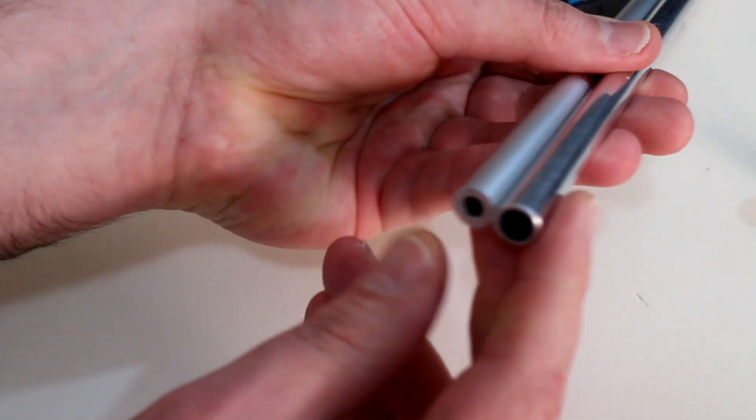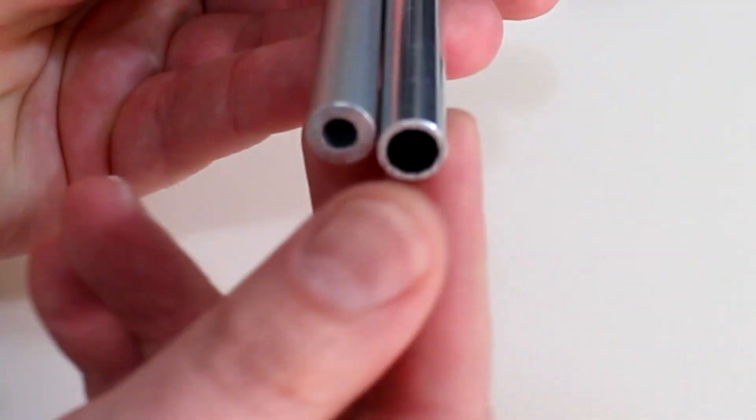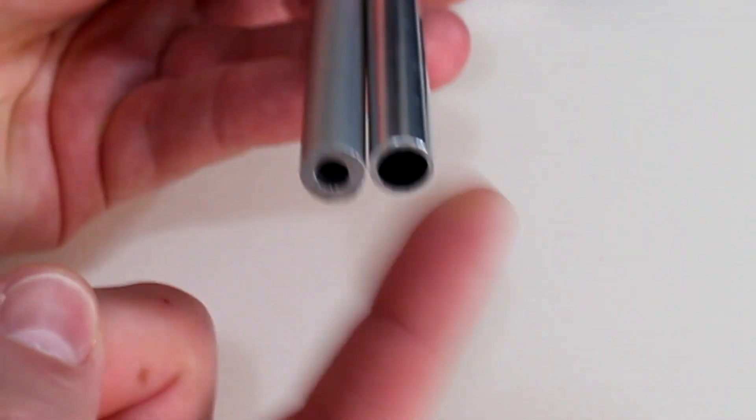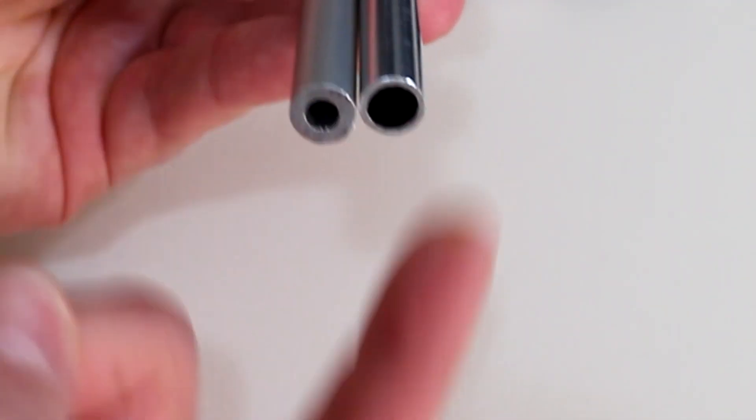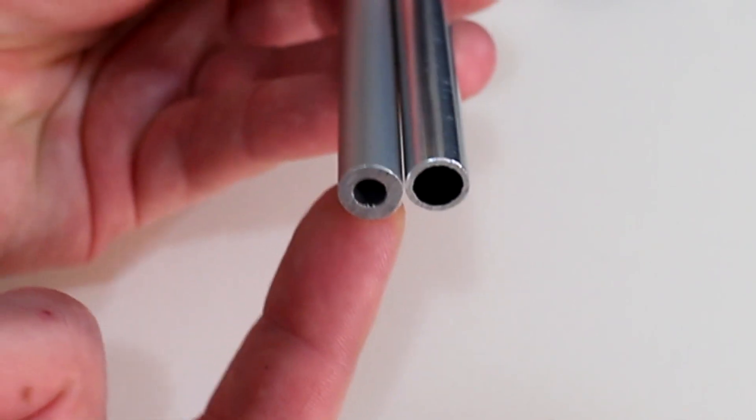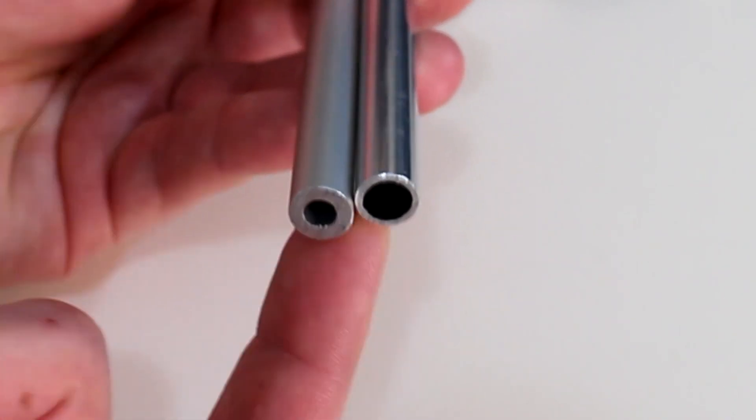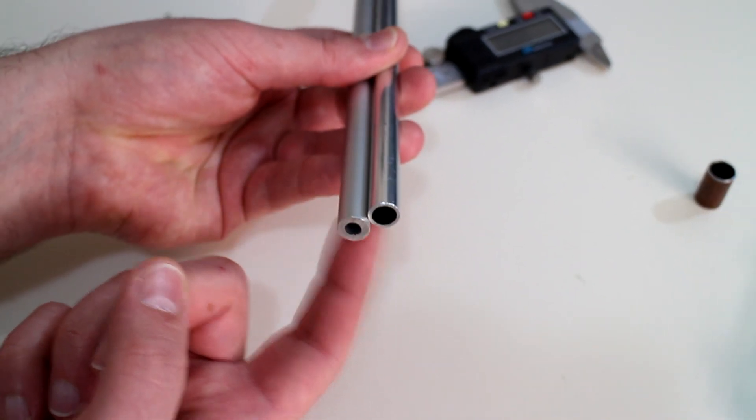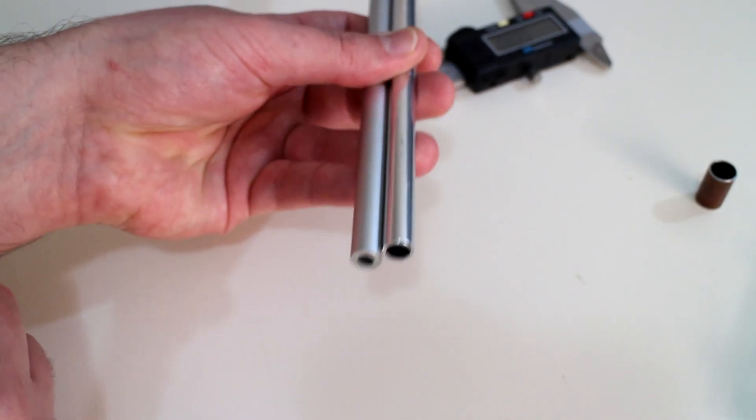The second difference between these two rods is the thickness of the tubes themselves. The original rod I was using only had a one millimeter thickness while this anodized stuff has a 2.4 millimeter thickness, so that was a bit of a bonus. That means this one's a bit stiffer but also a little bit heavier.